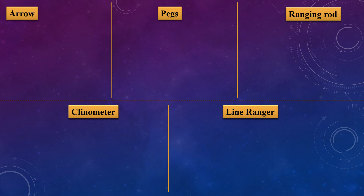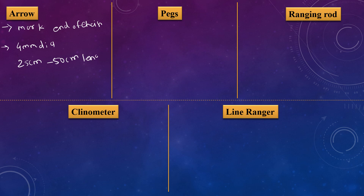Next are the instruments used for chaining. The first one is the arrow. The arrow is used to mark the end of the chain. It is made of steel material of 4 mm diameter.